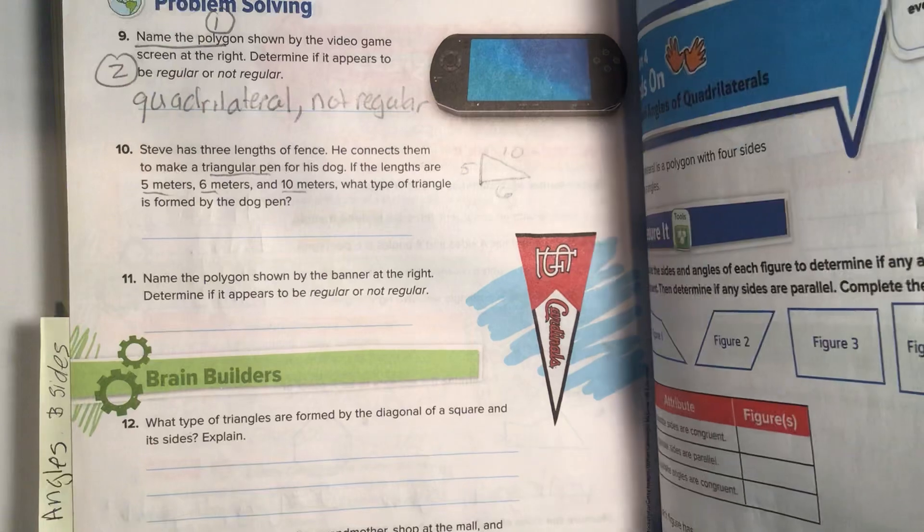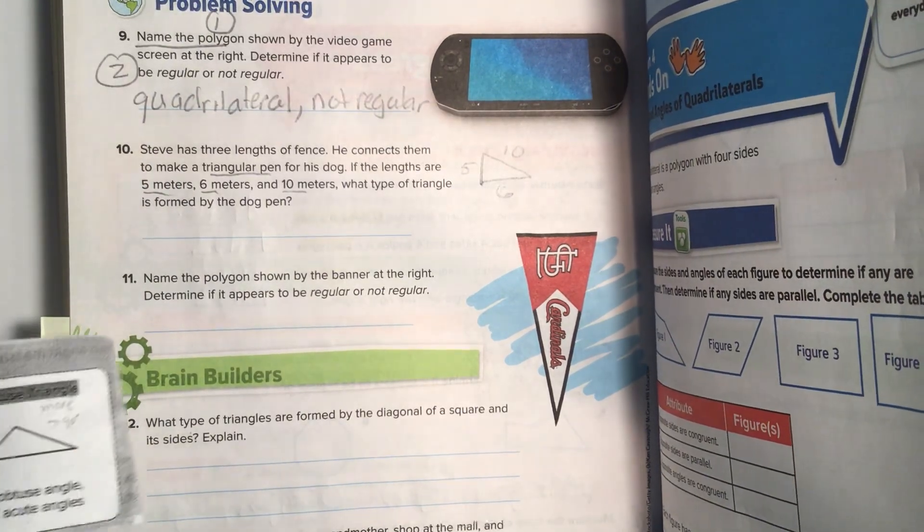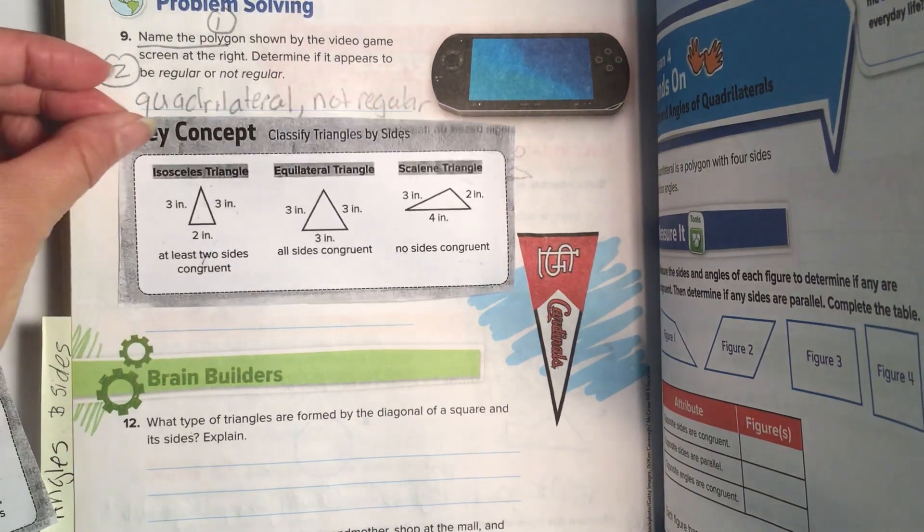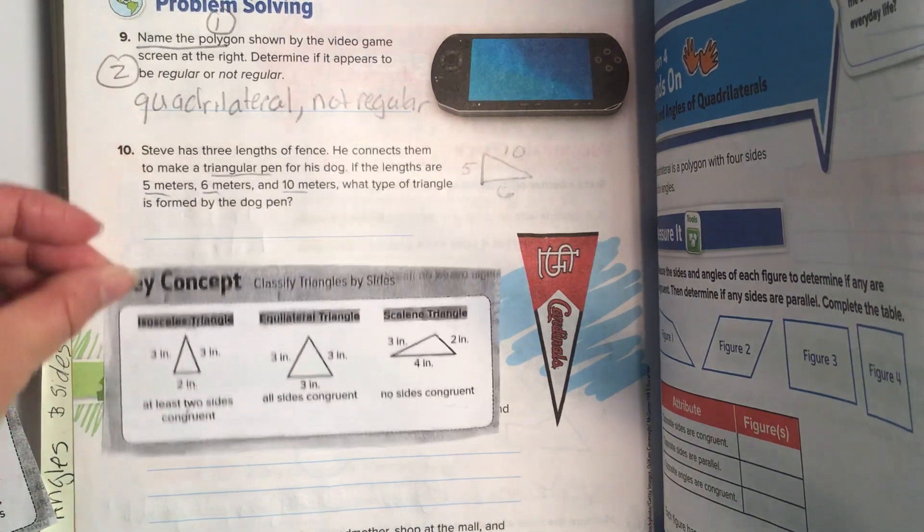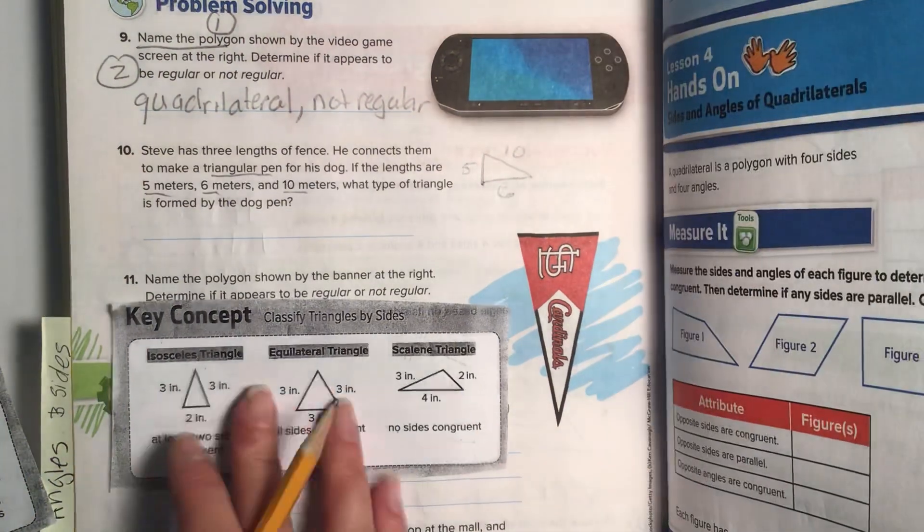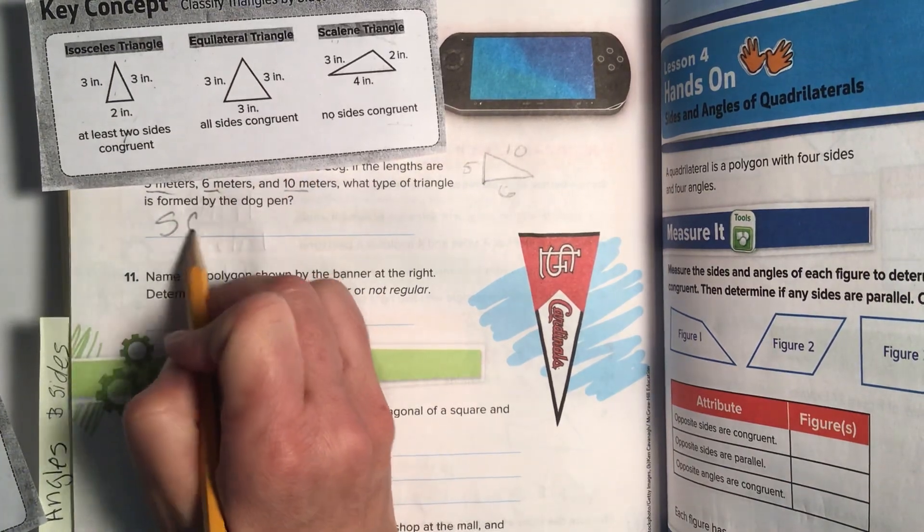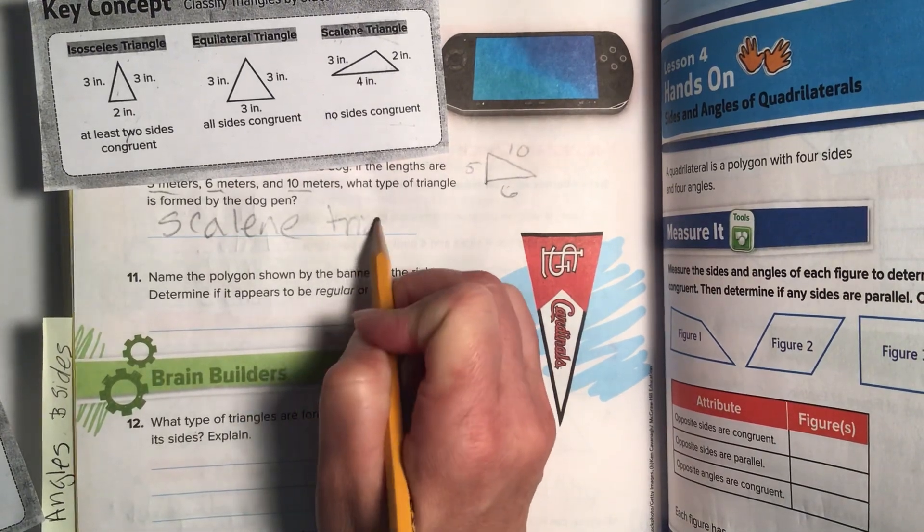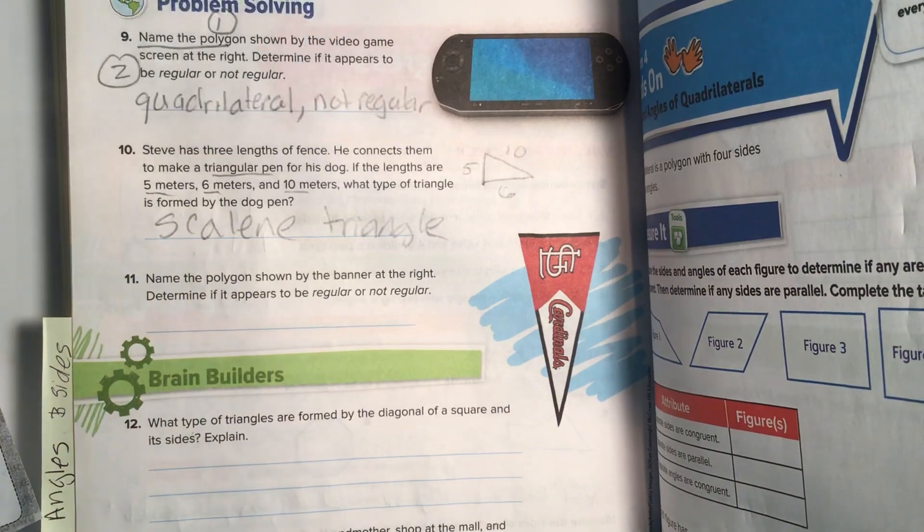So, what type of triangle would form that? Let's look at our classifying by sides. Do you see a triangle that looks like that where there's no congruent sides? Yep, you're right. A scalene triangle.